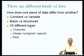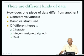Data of different types differ in the kinds of operations that can be done on them. These are at least three different ways in which data could be different.